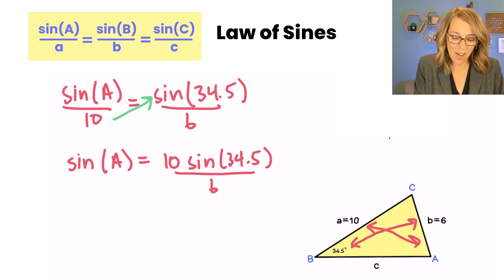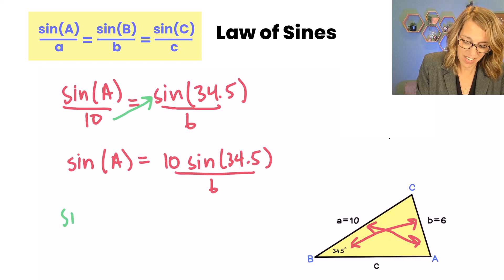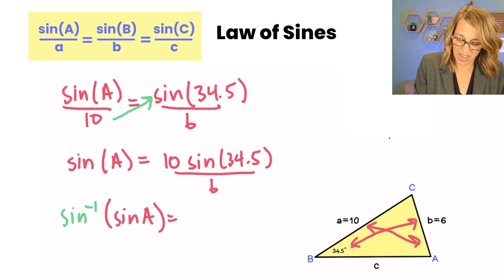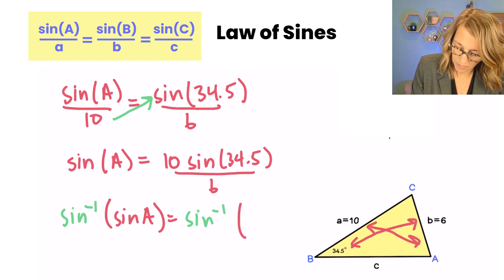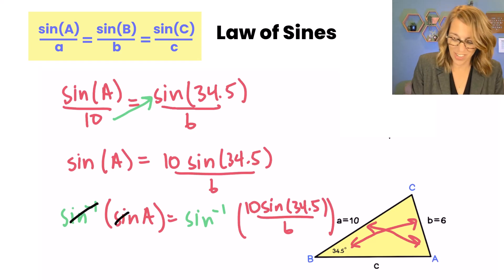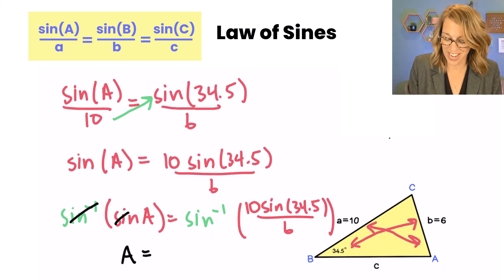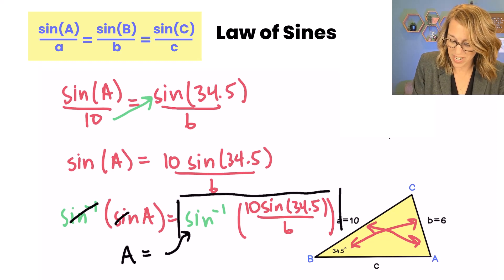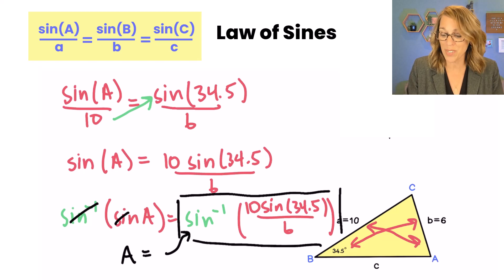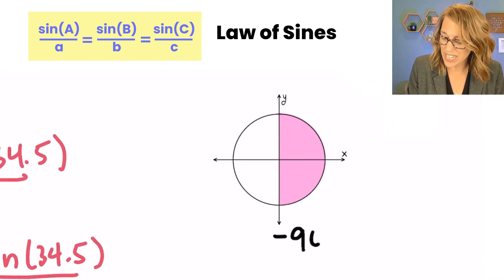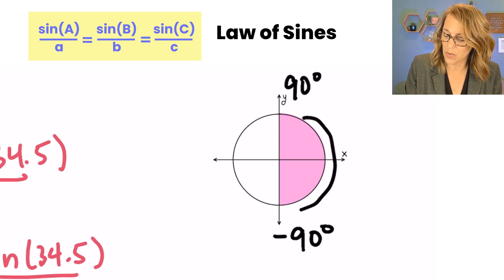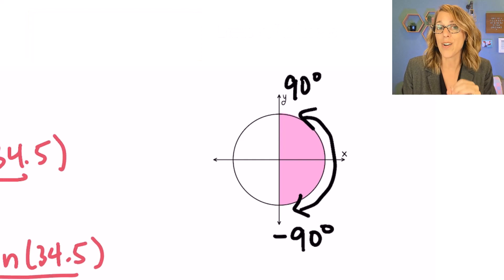I'm solving for angle A, so I want to isolate sine A by multiplying that 10 to the other side. So sine A equals 10 times the sine of 34.5, all divided by 6. To get A by itself I need to apply sine inverse to both sides. Now there's one issue: the range of possible outputs sine inverse will give you is only between negative 90 degrees and positive 90 degrees, so it only gives you acute angles — exactly what we'll get from our calculator.